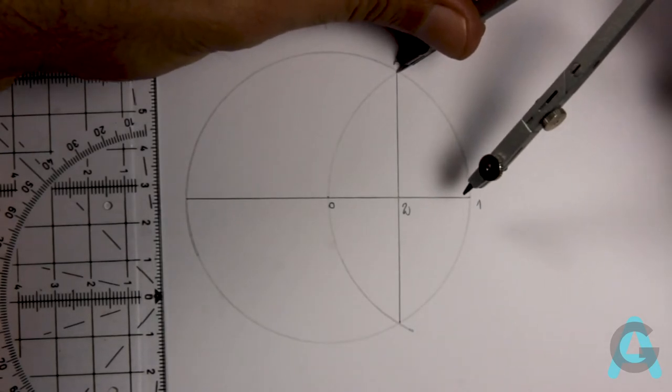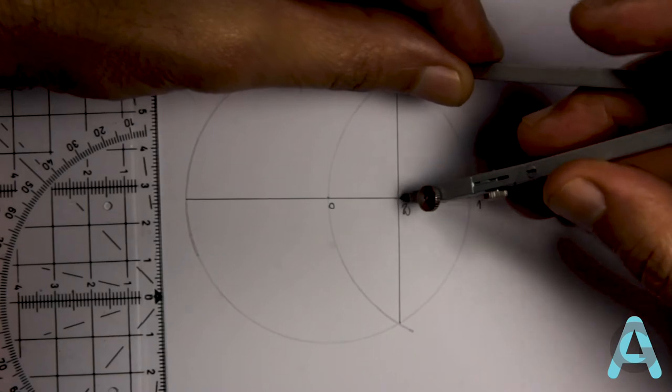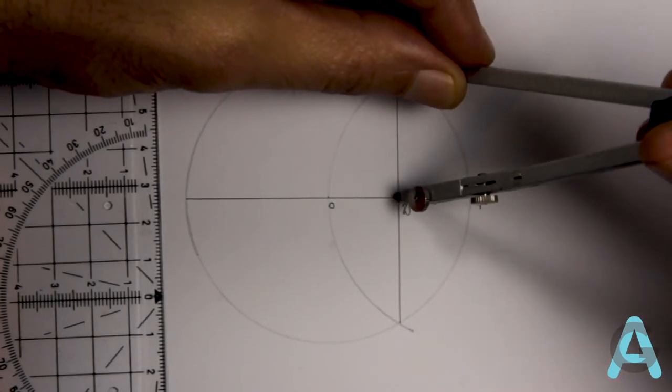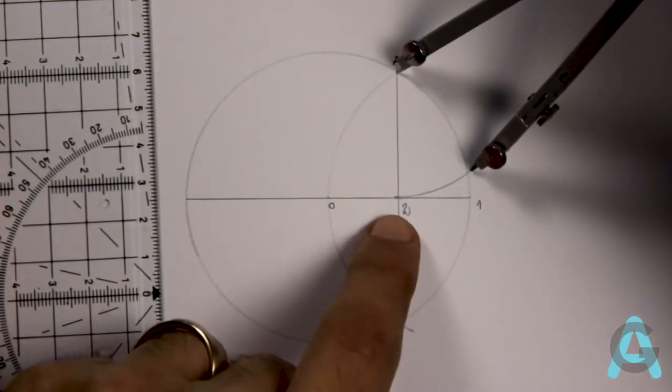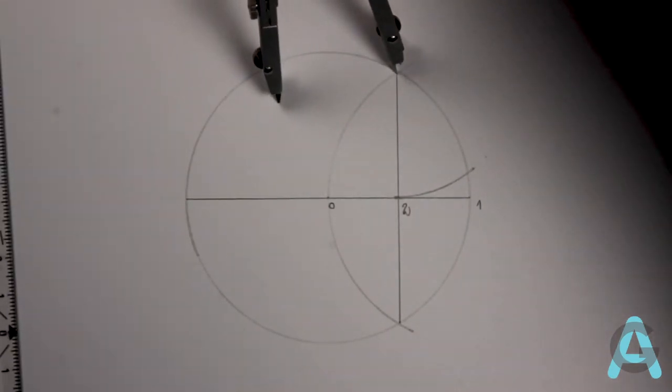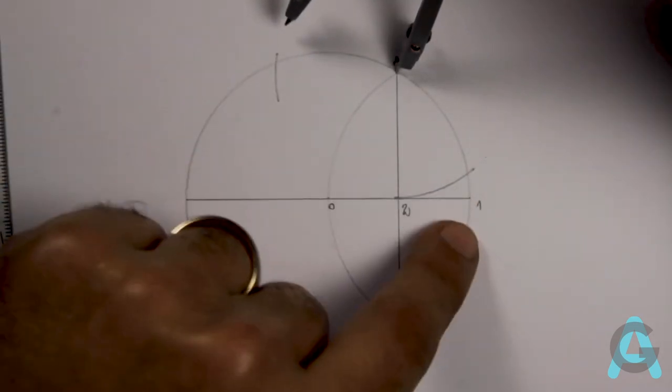Afterwards let's put the nozzle of the compass in A, open it until the point 2, and we'll transfer this measurement to the circle. We'll do this because the distance from A to 2 is equal to the sides of our heptagon. Now we'll just have to transfer this measurement through the circle.